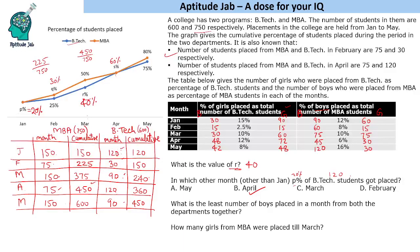Now let us answer the remaining two questions. What is the least number of boys placed in a month from both departments together? In January we have 120 boys total; February 75 — that looks like the least; March 105; April 93; May 162. So the least number of boys in a single month from both departments together is 75, in February. Next: how many girls from MBA were placed till March? That is 60 plus 15 plus 75 equals 150. So the answer is 150.